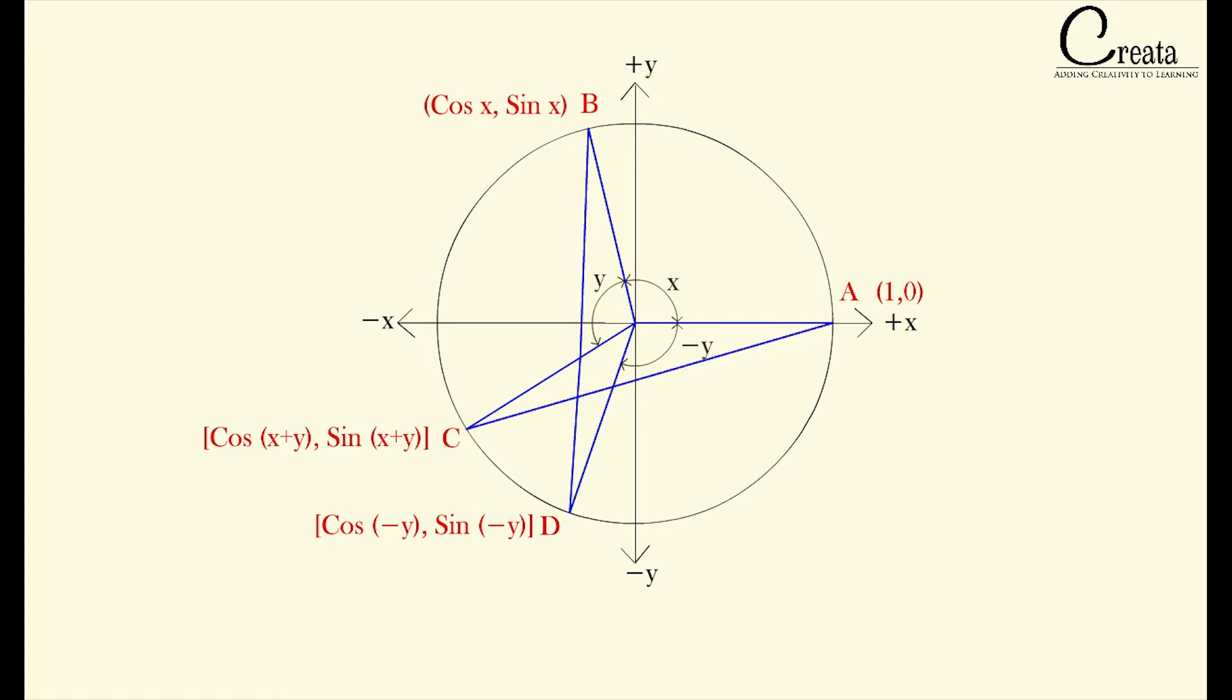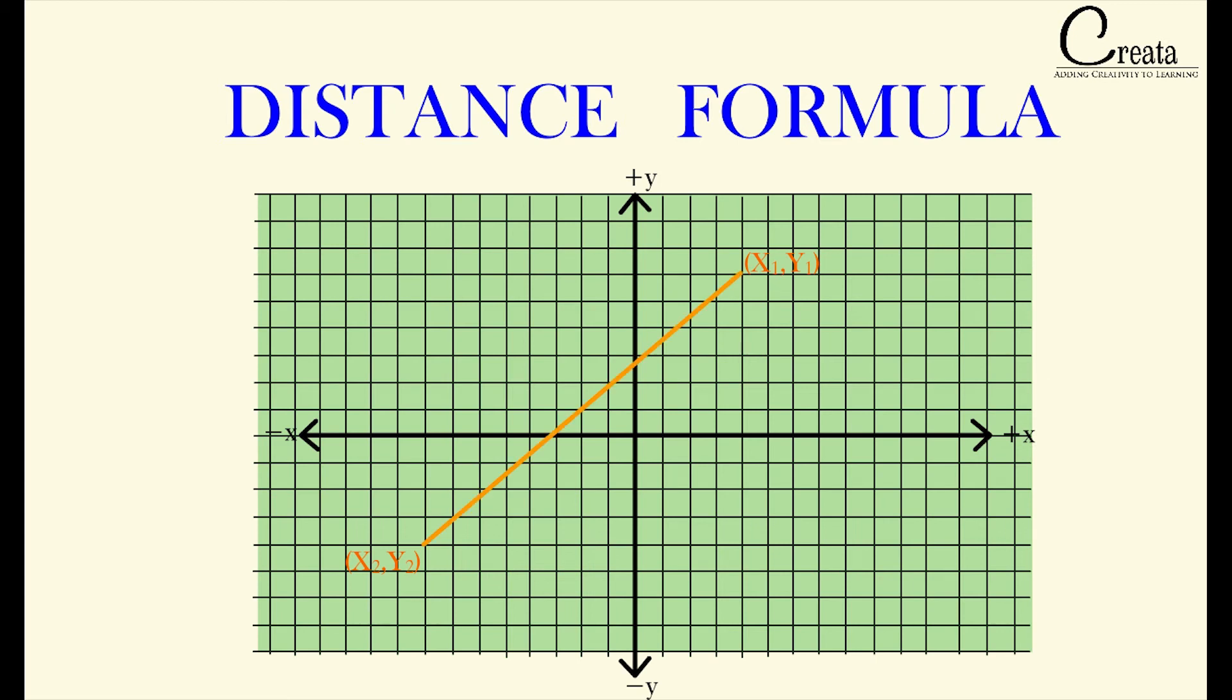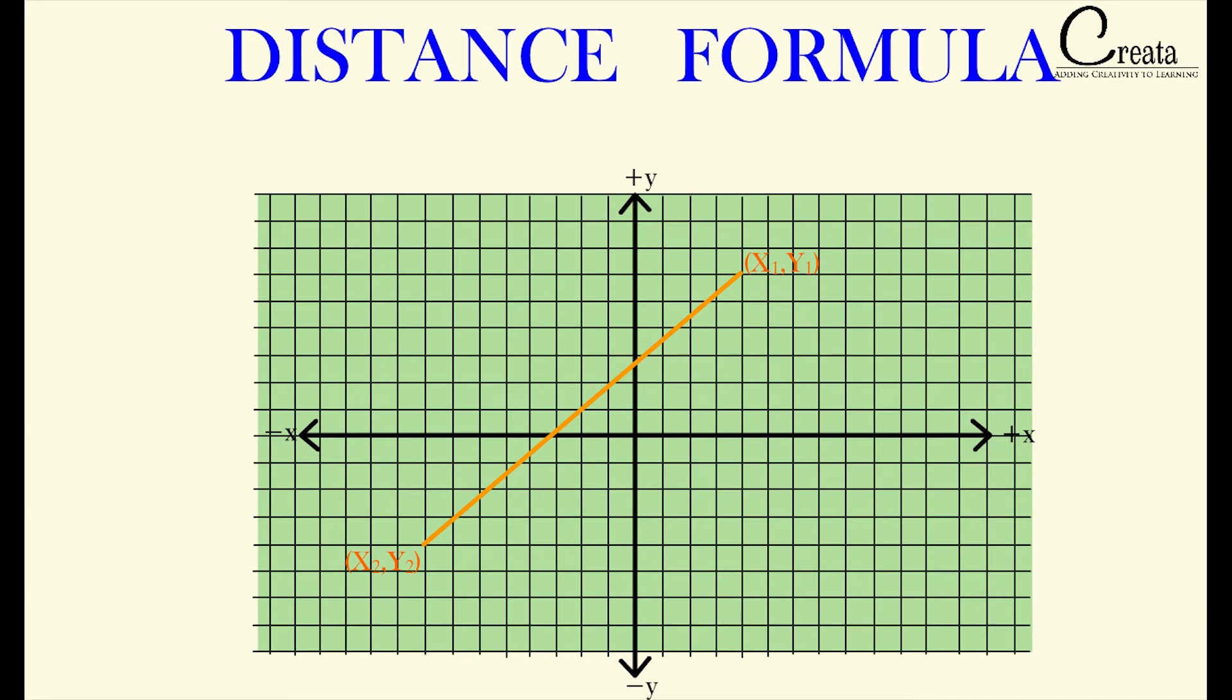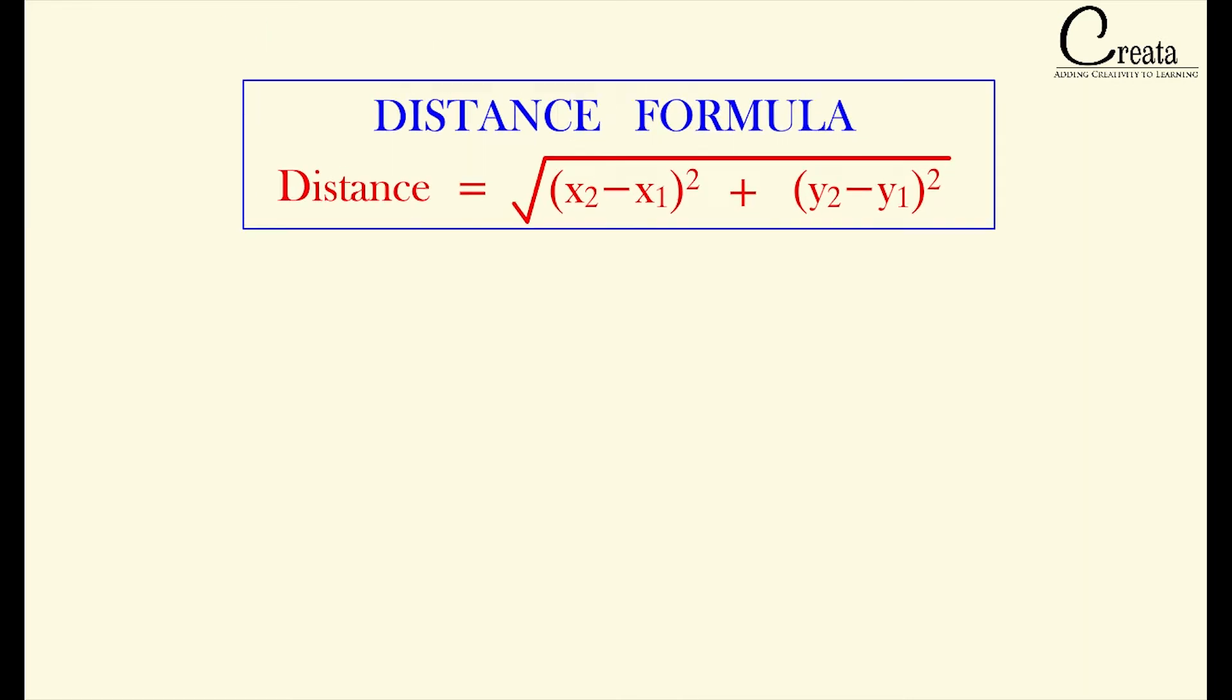Can we calculate the length B, D and A, C with help of these coordinates? If we apply the distance formula we can calculate the length between any 2 coordinates. That is the part of coordinate geometry. For now just know that distance between any 2 coordinates, say x1, y1 and x2, y2 is root of x2 minus x1 whole square plus y2 minus y1 whole square.